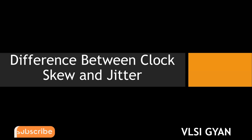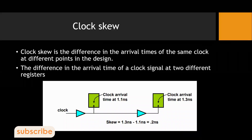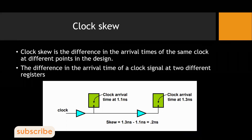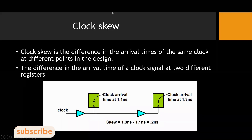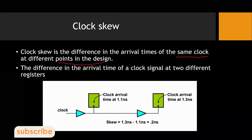I have made a separate video on clock skew — I will provide the link in the description box where you can gain more detailed information. Here we are mainly focusing on the difference between clock skew and clock jitter. Clock skew is the difference in the arrival time of the same clock at different points in the design. When the clock is not arriving at all points at the same time, that gives rise to clock skew.